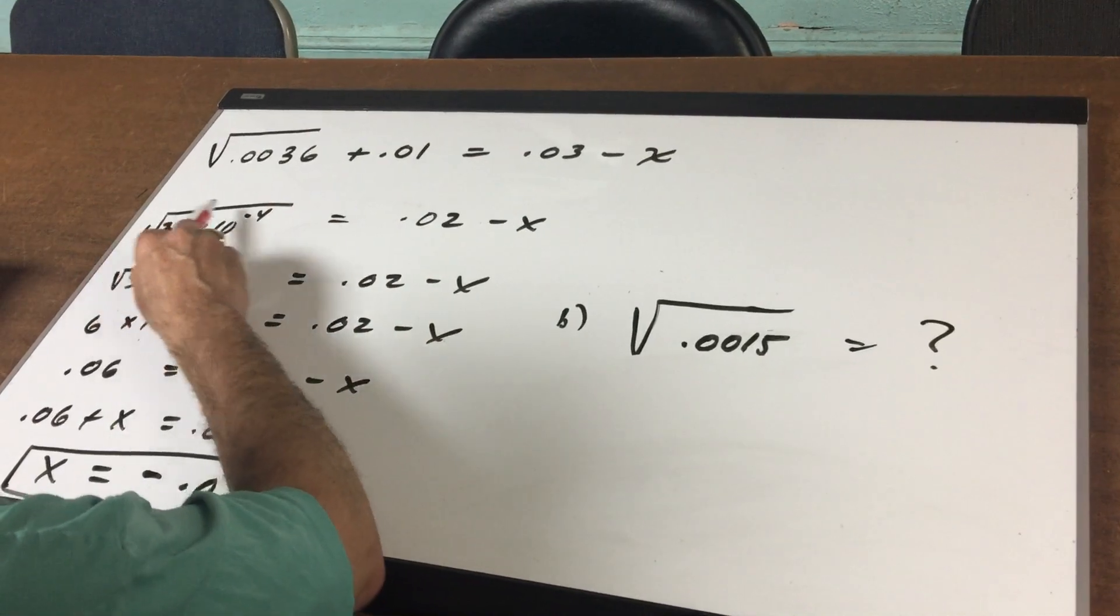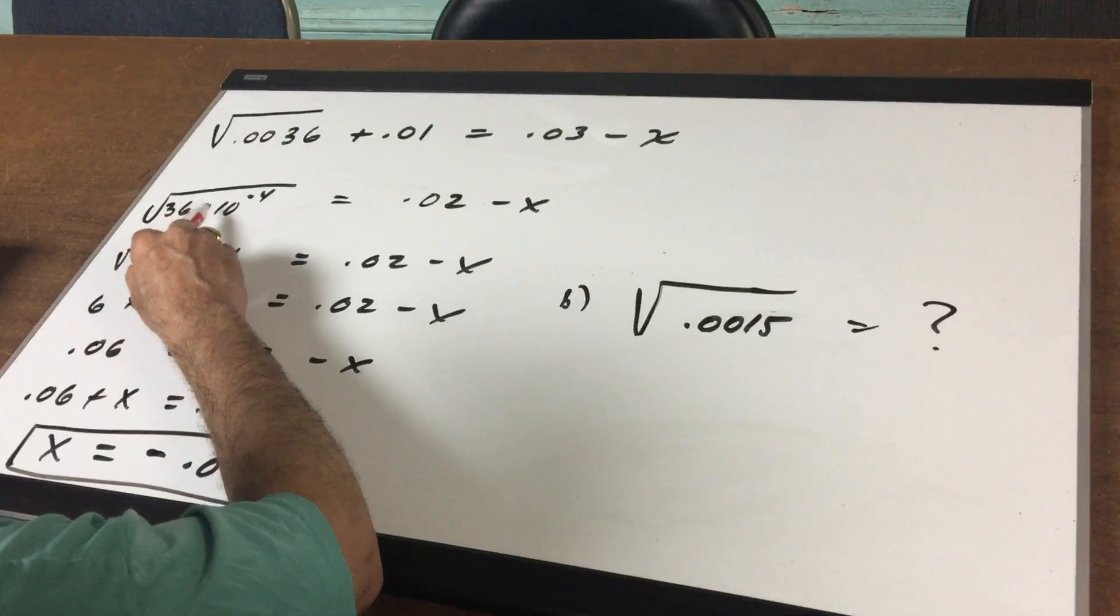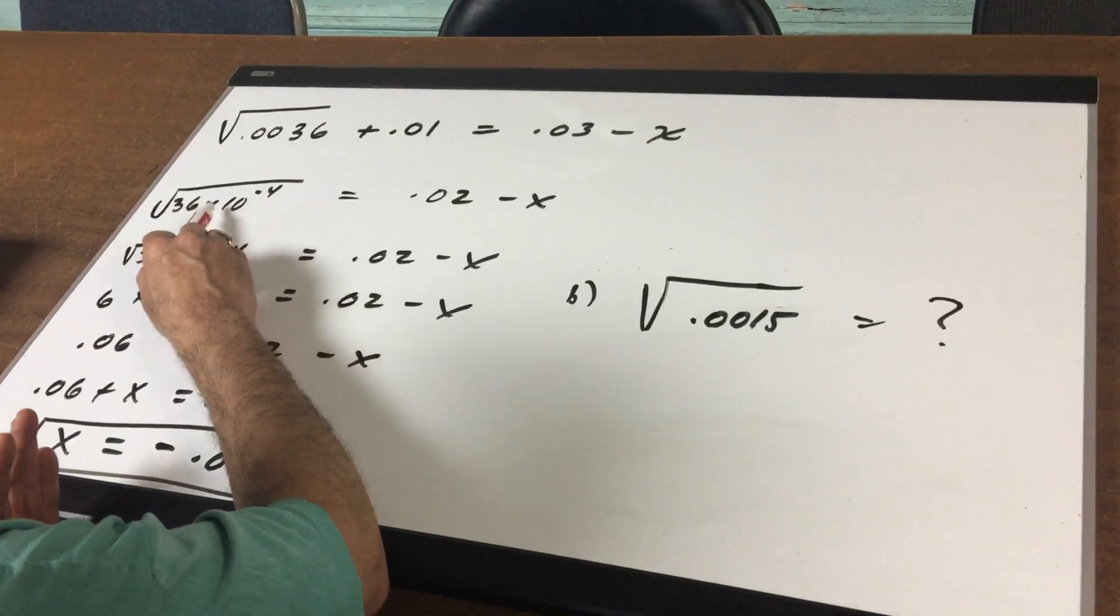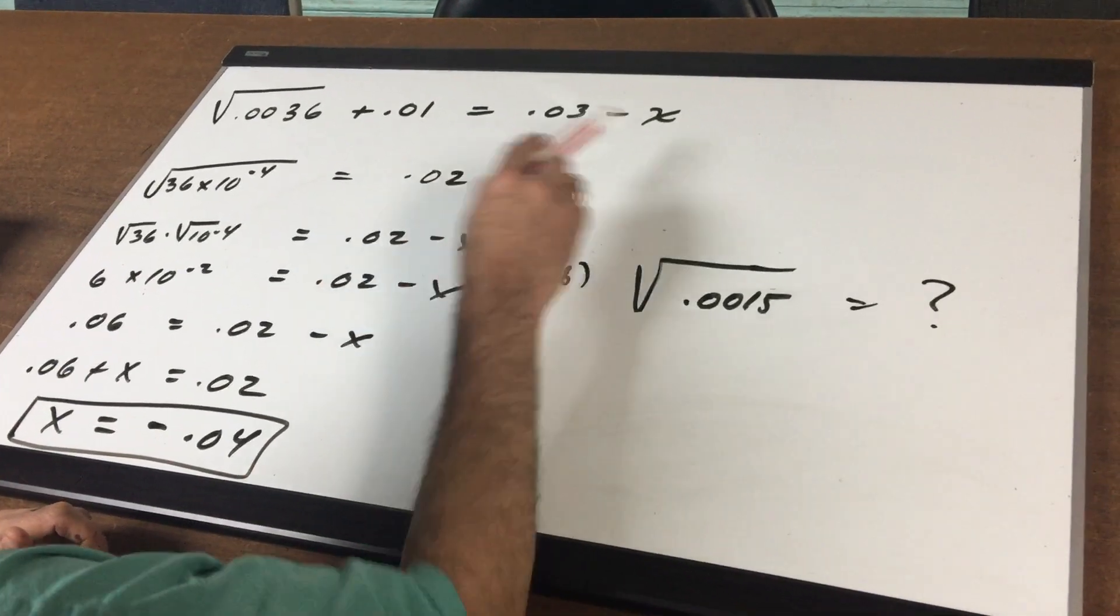So I get the square root of 36 times 10 to the minus 4th on the left, and when I subtracted the 0.01, that gave me my 0.02, and there's my minus X.